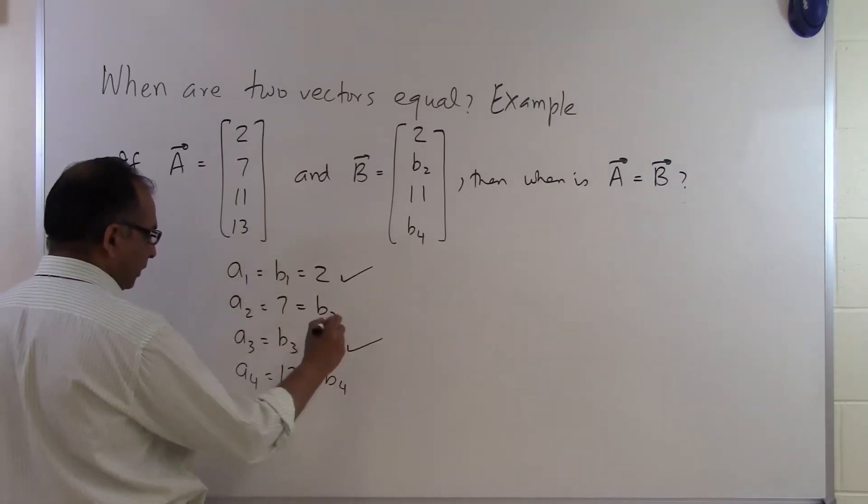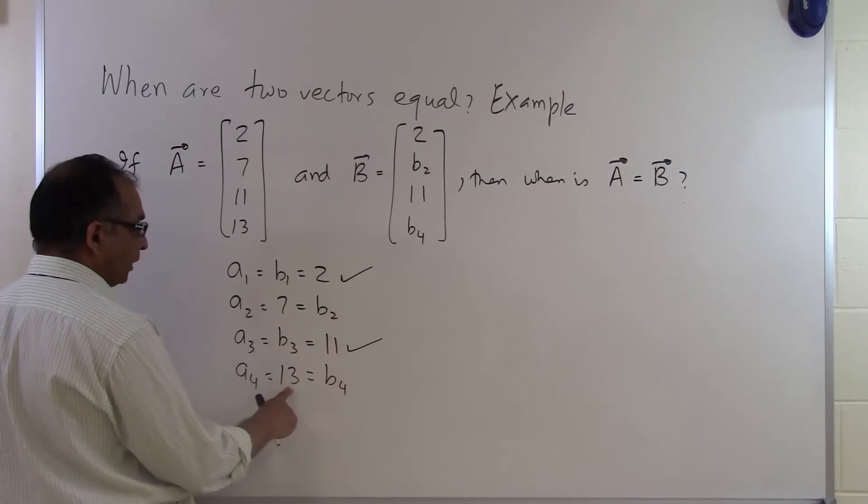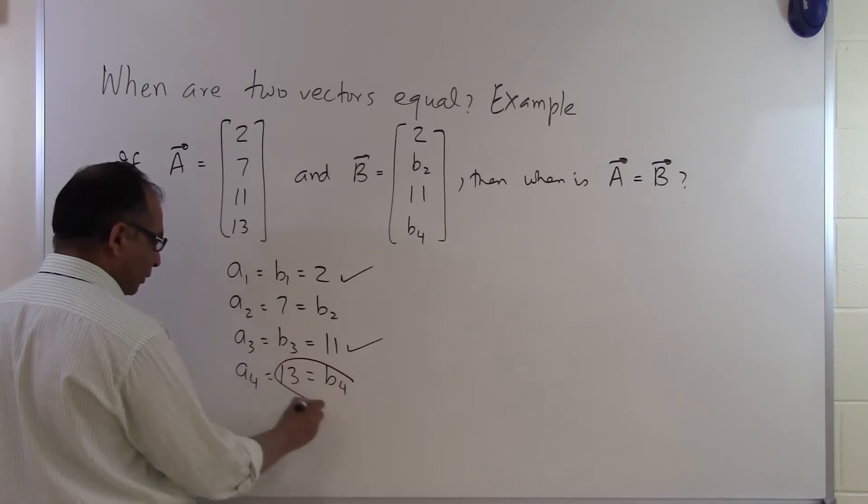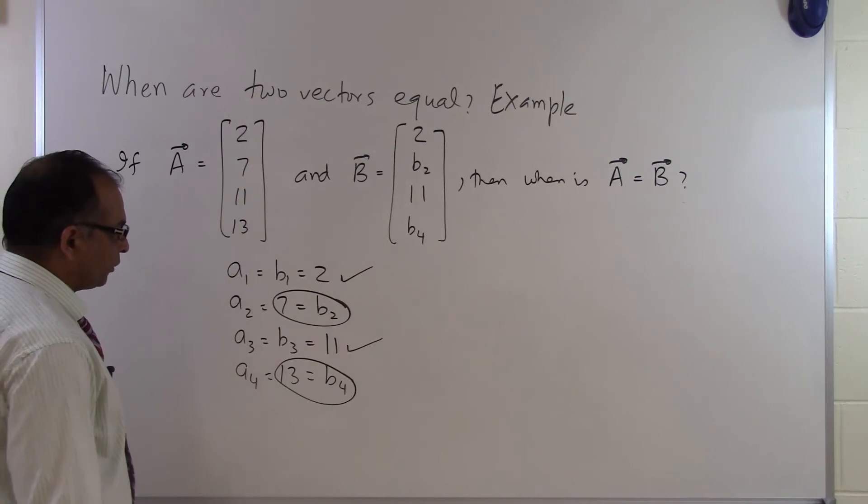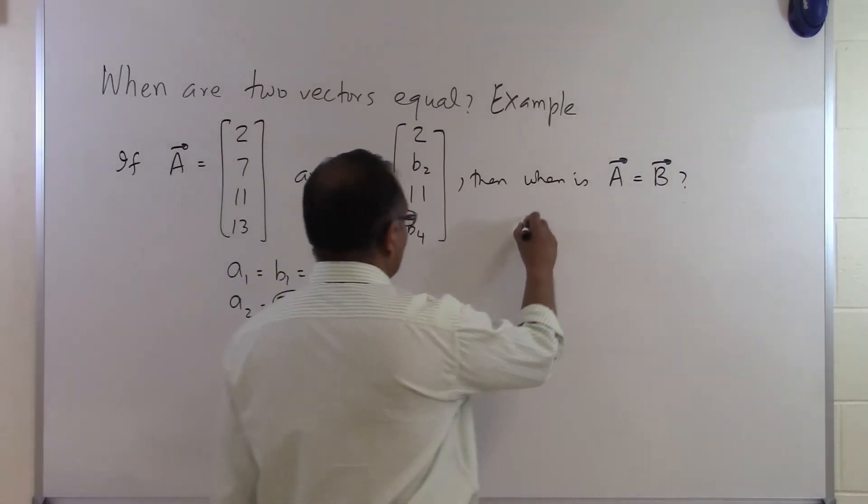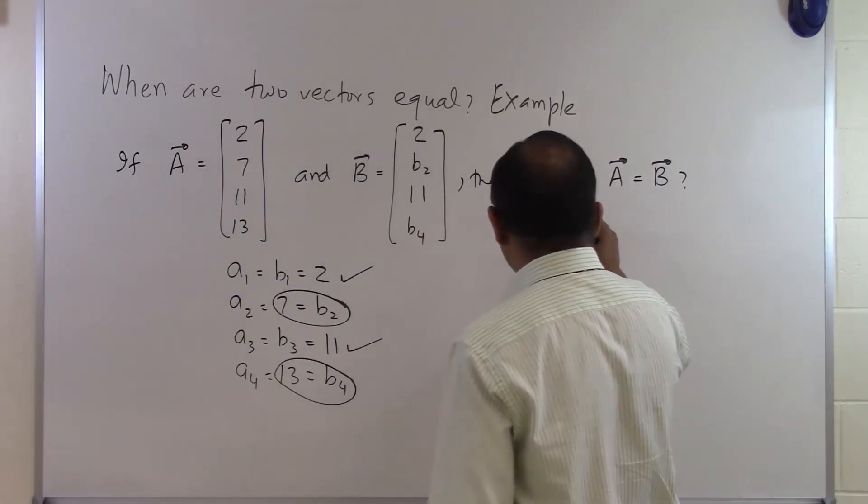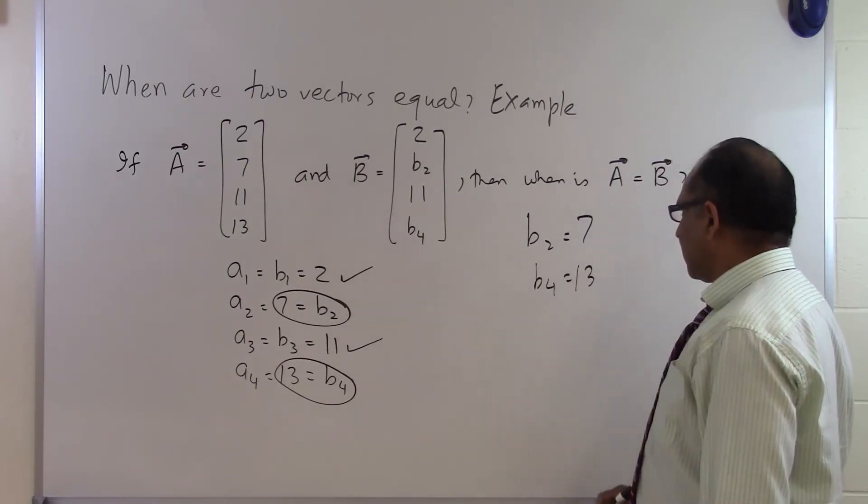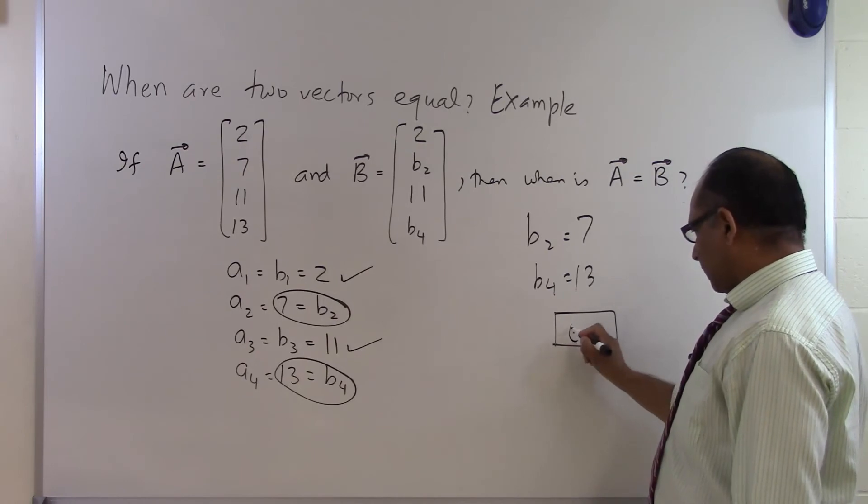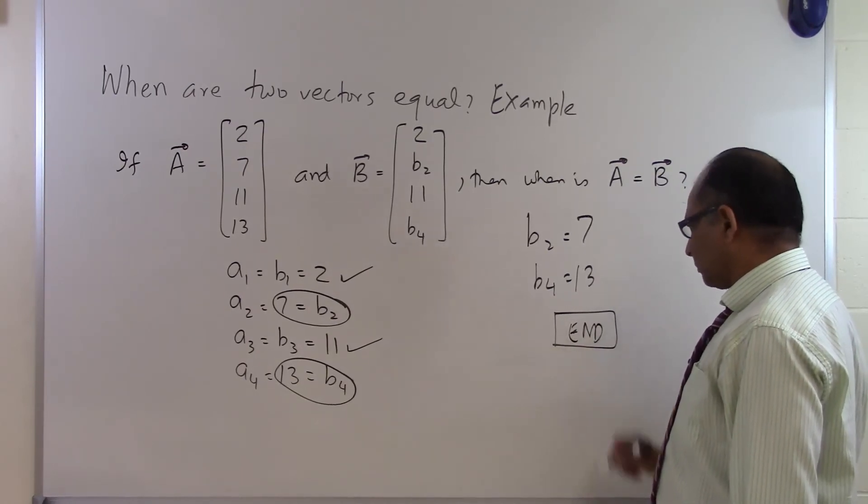Similarly, A4 is 13, but B4 is not given. For the vectors to be equal, A4 must equal B4, so B4 must be 13. Therefore, the two vectors are equal when B2 equals 7 and B4 equals 13. That is the end of this segment.